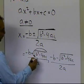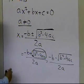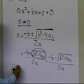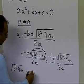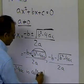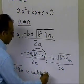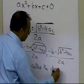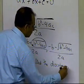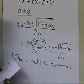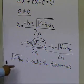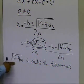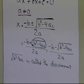The thing to note is that this is called the discriminant — the square root of b squared minus 4ac is called the discriminant. And based on what the value of b squared minus 4ac is, your roots can take certain forms.